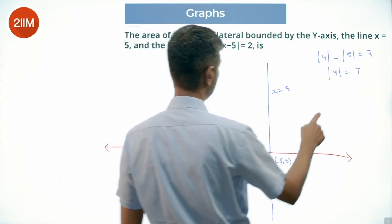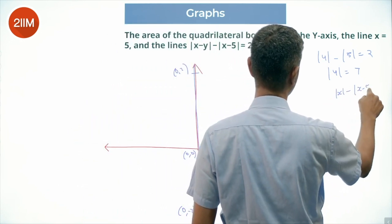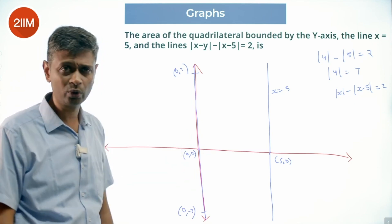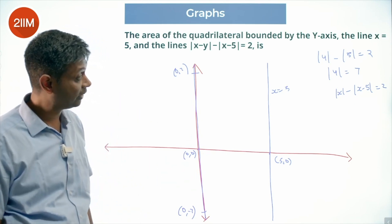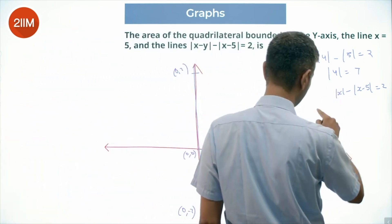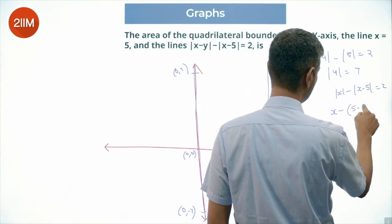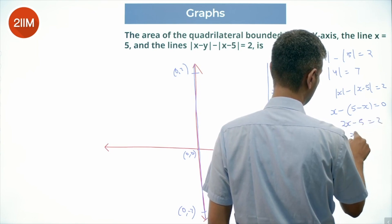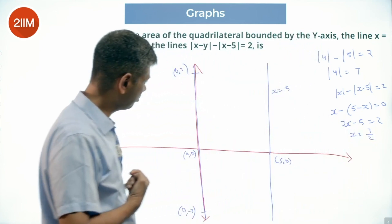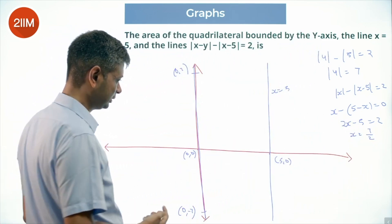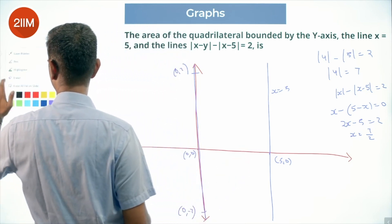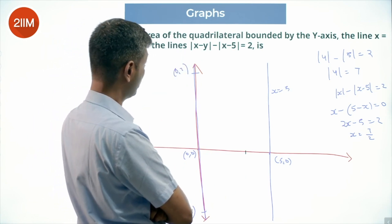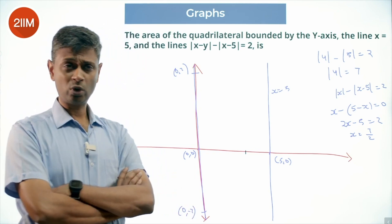Put y = 0: we have |x| - |x - 5| = 2. In the range x between 0 and 5, |x| = x and |x - 5| = 5 - x. So x - (5 - x) = 2, giving 2x - 5 = 2, so 2x = 7, x = 7/2. The line cuts the x-axis at (7/2, 0), i.e., (3.5, 0). Verification: 3.5 - |3.5 - 5| = 3.5 - 1.5 = 2. Yes, that works.